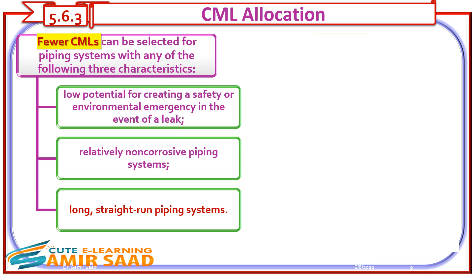Circuits with corrosion environments which have experienced unexpected failures in the facility or elsewhere in the industry also require more CMLs. Fewer CMLs can be selected for piping systems with any of the following characteristics: low potential for creating a safety or environmental emergency in the event of a leak; relatively non-corrosive piping systems; and long, straight-run piping systems.